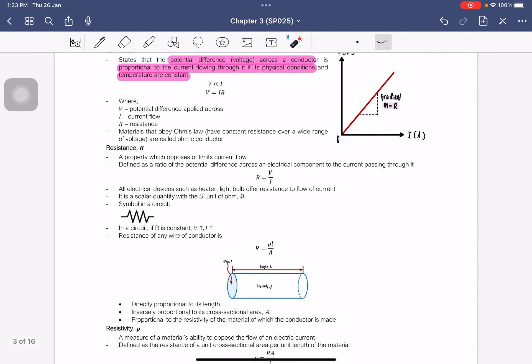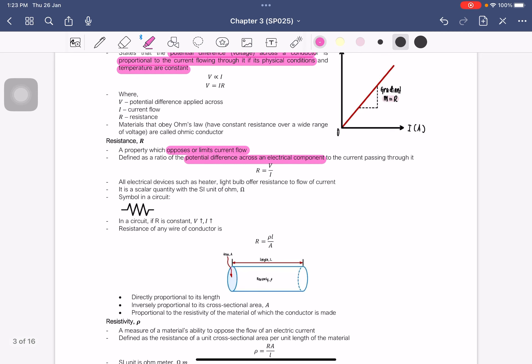So resistance is a property which opposes or limits the current flow. It is defined as the ratio of the potential difference across an electrical component to the current passing through it. So remember resistance must be there for current flow. So the equation for resistance is the one shown here, R equal to V over I. It is basically V equal to IR. They rearrange to get R equals V over I.